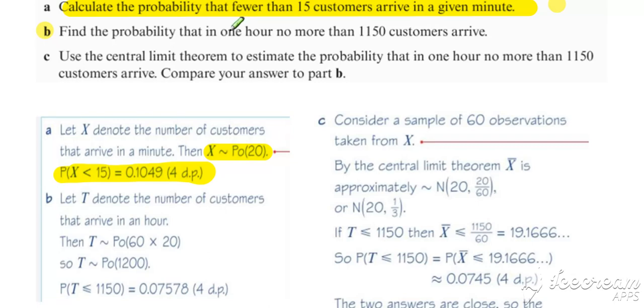What we've got in part B is a change of time period. So rather than a minute, we've got an hour. So we need to adjust our lambda value to 1,200. And then we want to work out the probability of less than or equal to 1,150. Again, you can just use your Poisson function on your calculator to work that out.